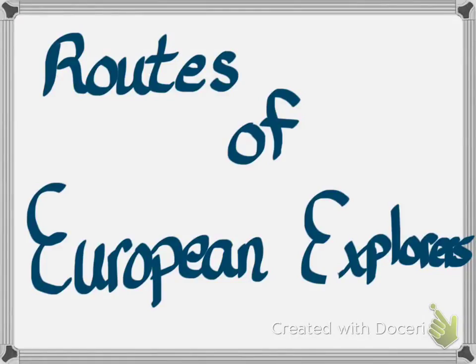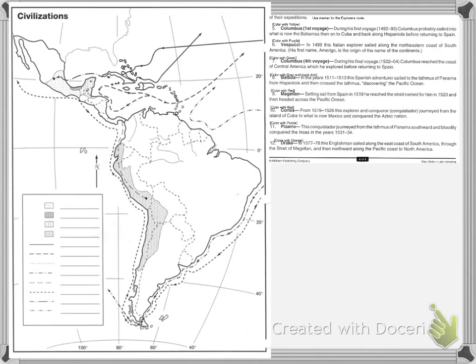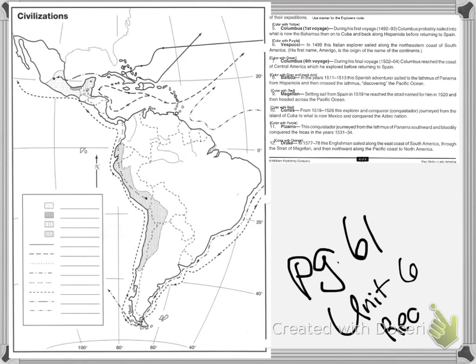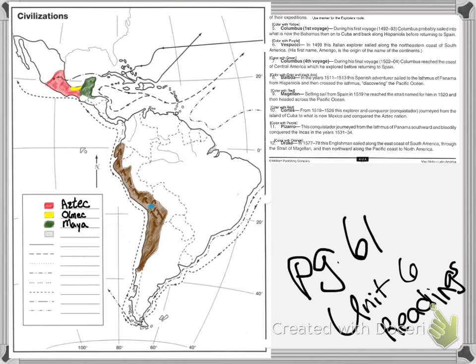Hello and welcome to the lesson on the routes of European explorers to America. This is the map and the reading we will be using. Your map is located on page 61, back in unit 6 with readings. The map is being filled in with the ancient civilizations we discussed in unit 6: the Aztecs, Olmecs, Mayans, and Incans.